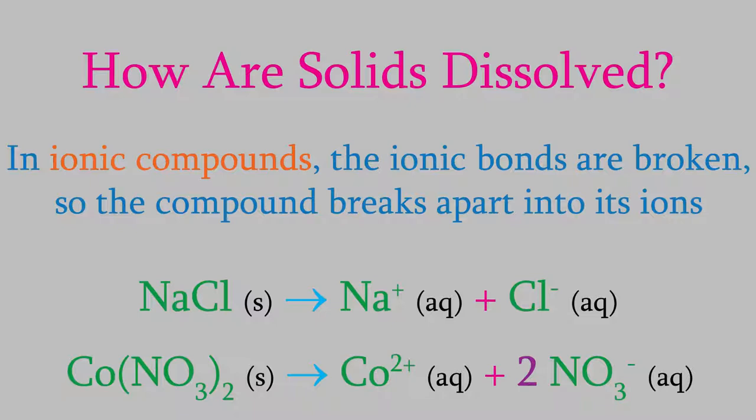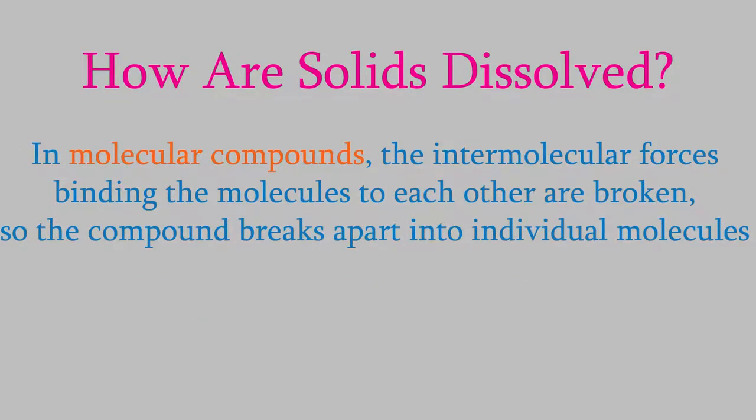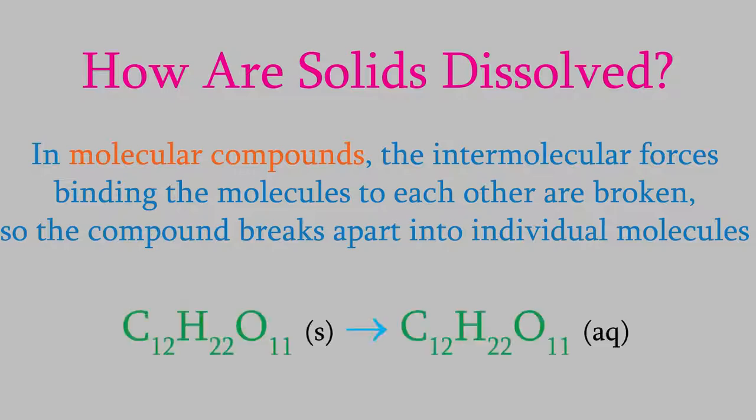On the other hand, if we dissolve a molecular solid, it's not ionic bonds that are broken. Instead, the intermolecular forces that hold the molecules to each other are broken, so the molecules separate, and we have individual molecules floating in our solution. For example, this is what happens with table sugar, or sucrose, which is a molecular compound.